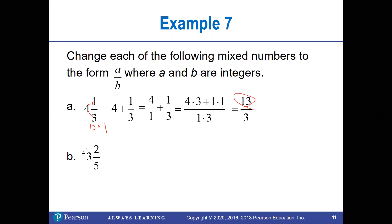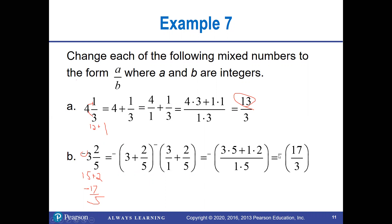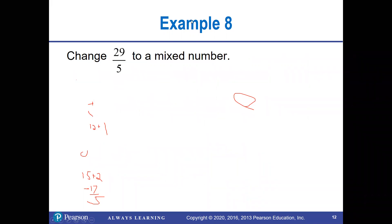For a negative mixed number, ignore the negative sign first. Multiply: 3 × 5 = 15, plus 2 = 17, over 5. Then put the negative out in front: −17/5. That's one of the easier ways of dealing with it — using the common denominator approach is a lot tougher.